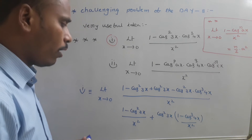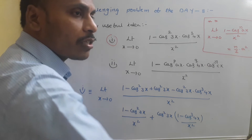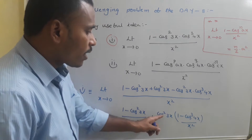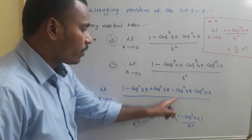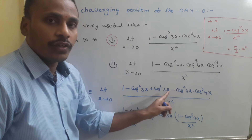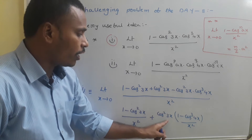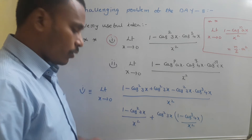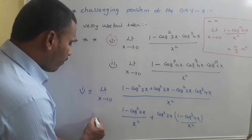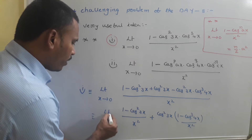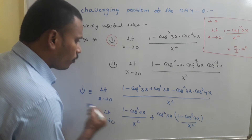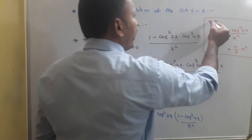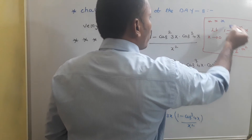So we have: (1 - cos²(3x)) / x² plus cos²(3x)·(1 - cos³(4x)) / x², with limit as x tends to zero. Now just use the standard formula to answer this.